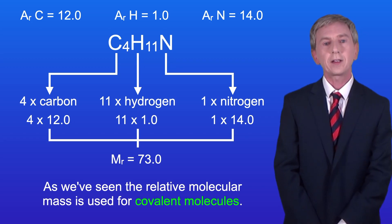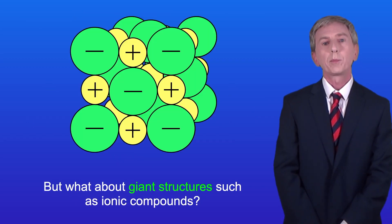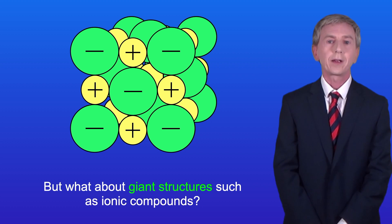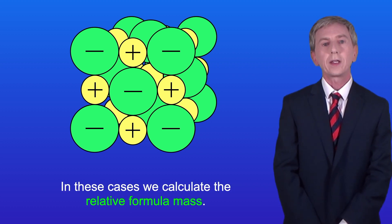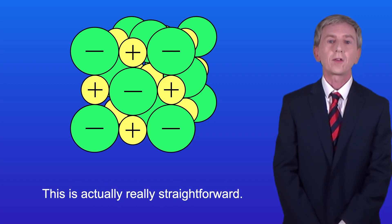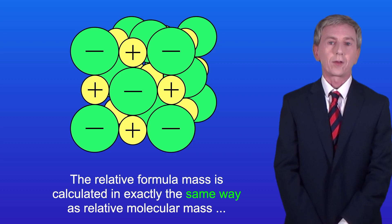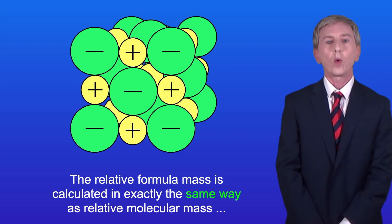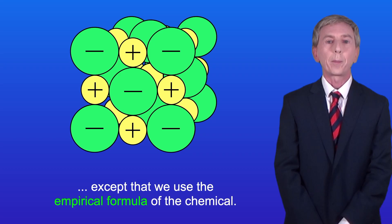The relative molecular mass is used for covalent molecules. But for giant structures such as ionic compounds, we calculate the relative formula mass instead. The relative formula mass is calculated in exactly the same way as relative molecular mass, except that we use the empirical formula of the chemical.